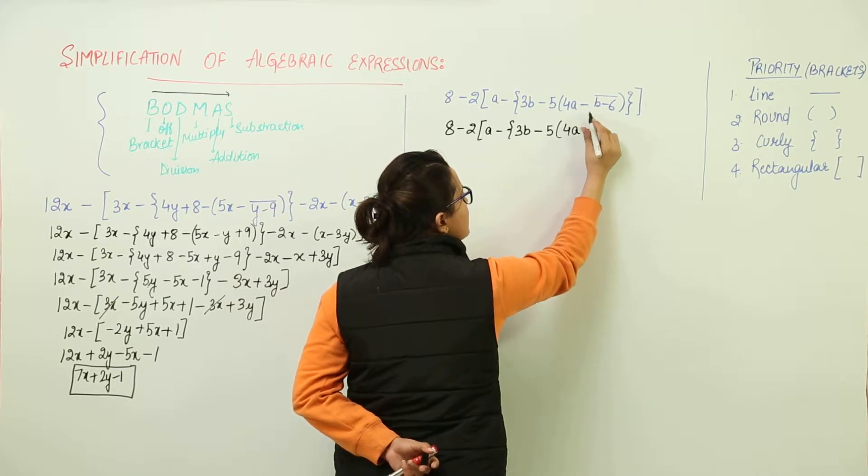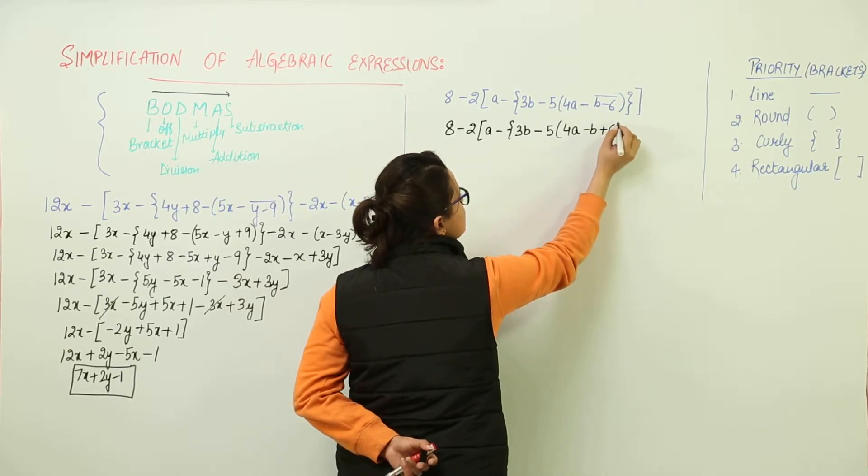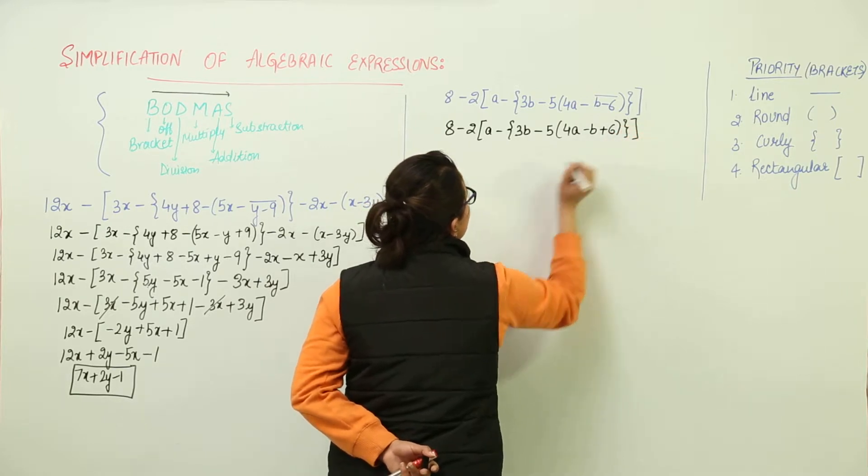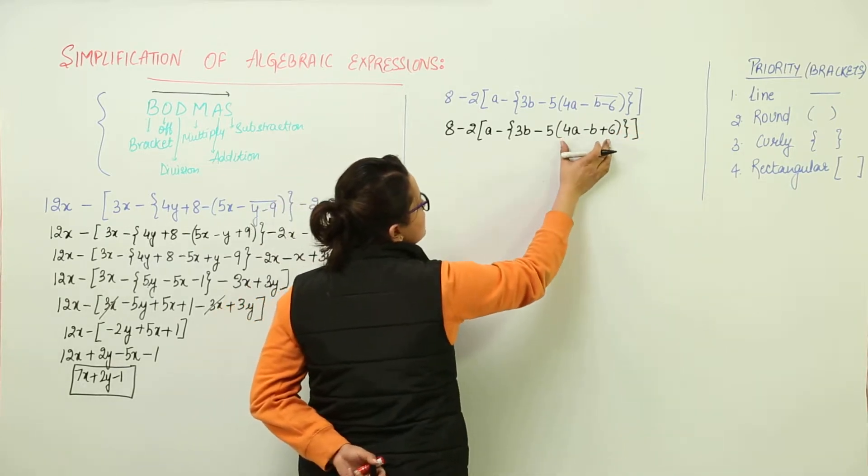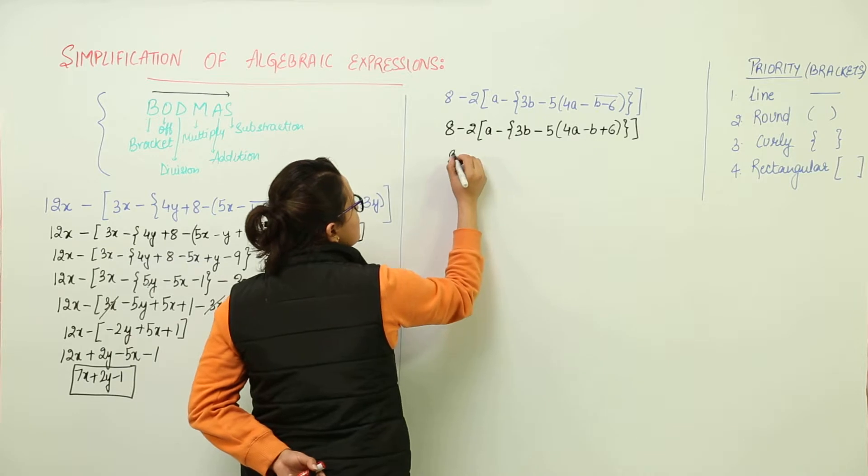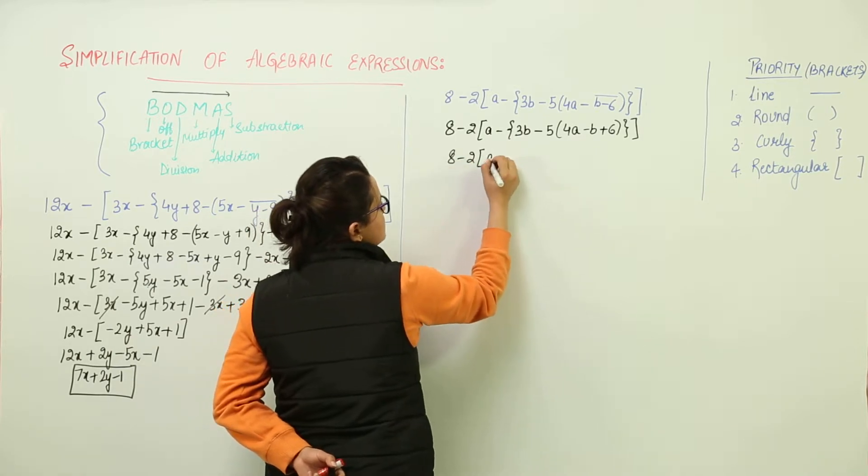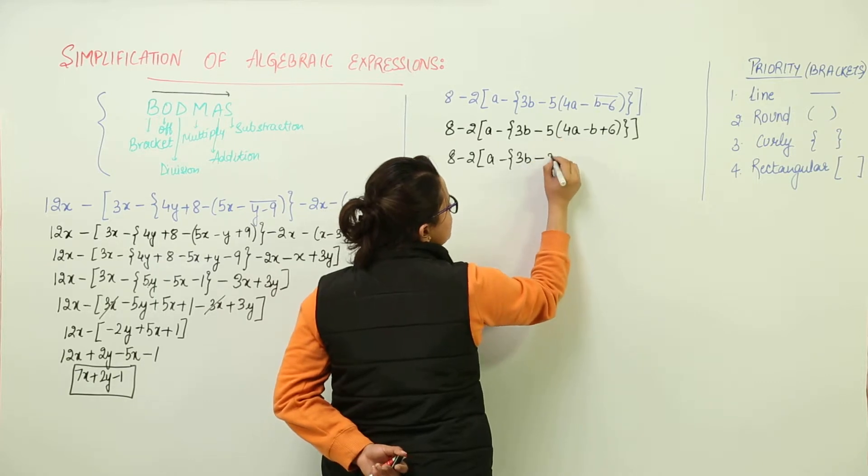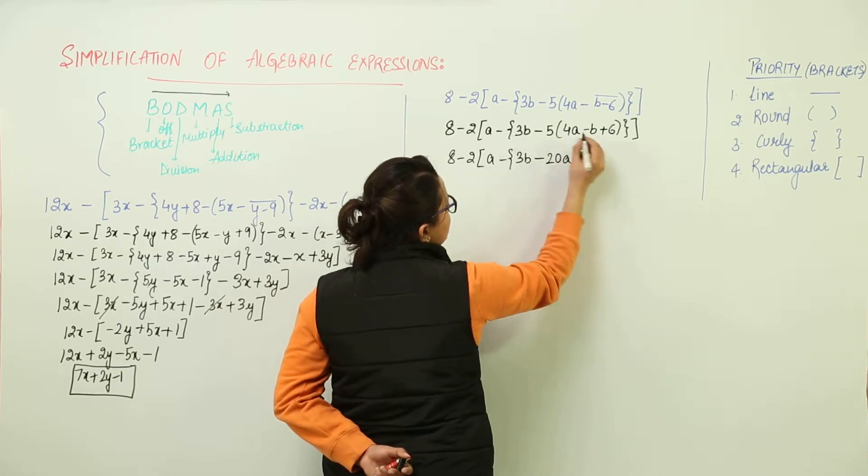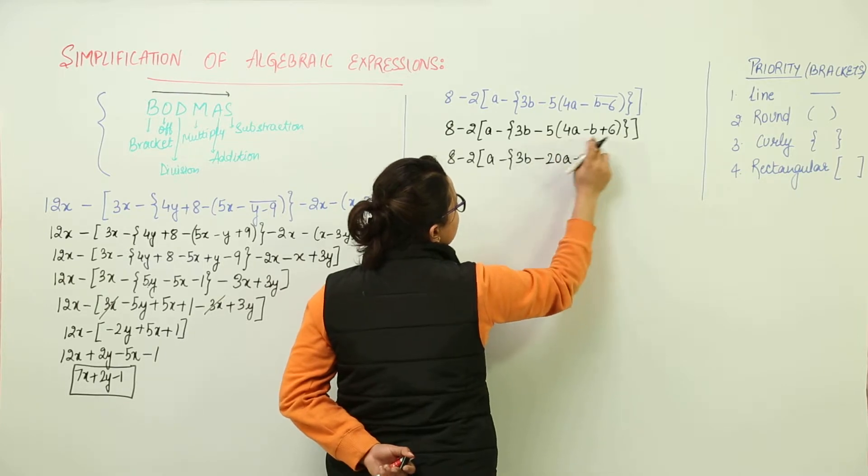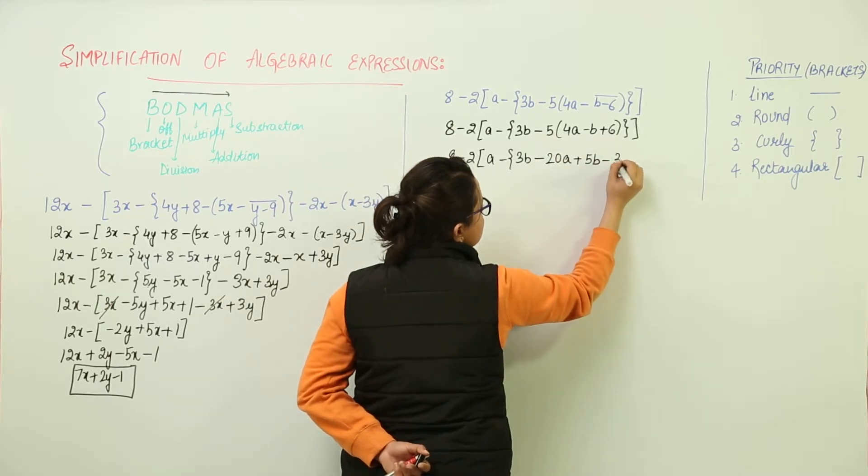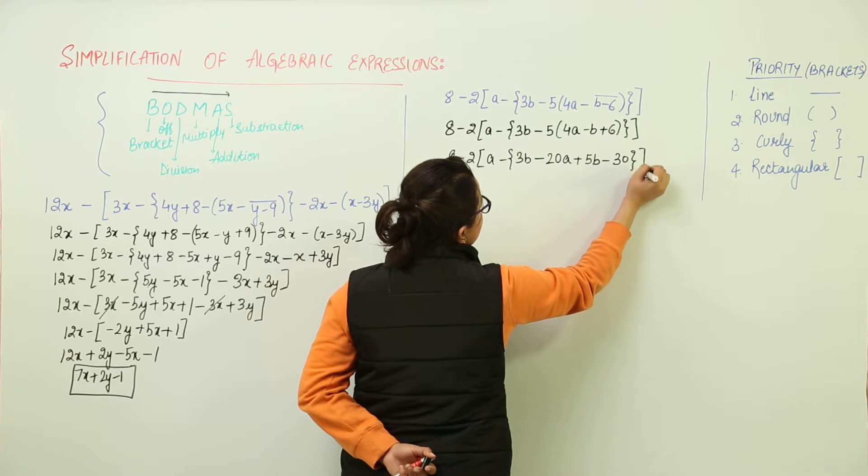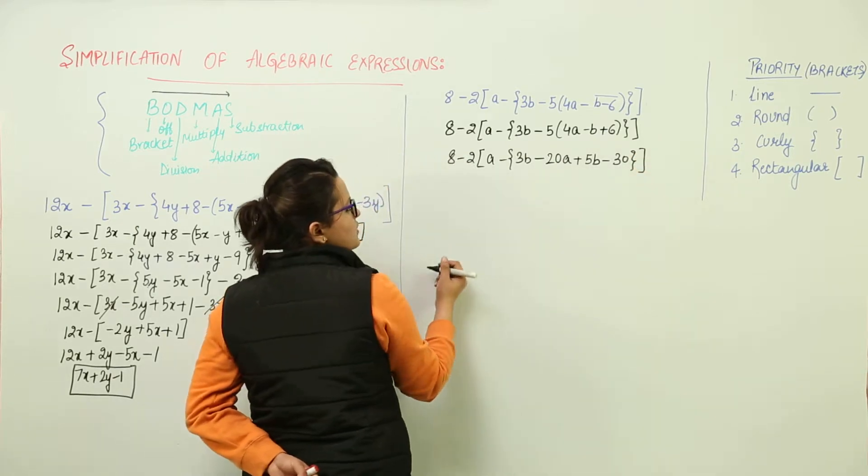So now in the next step we are going to remove the round brackets because it cannot be solved any further. So we have 3b minus 5 for a 20a minus minus plus 5b and minus plus minus 5 for a 30. So we have got rid of the round brackets also.